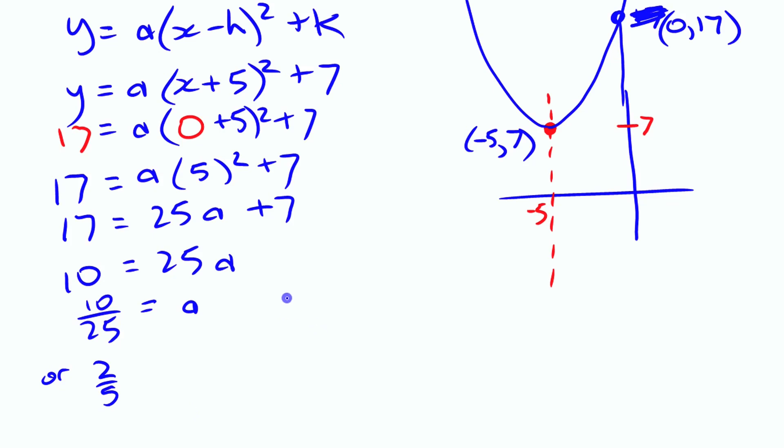Alright, so then your equation is going to be either one of those, x plus 5 squared plus 7. That's what it is.